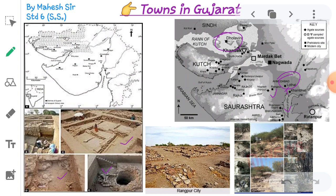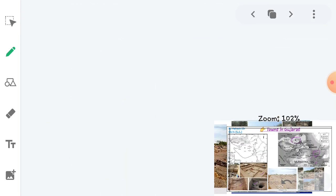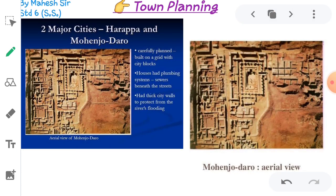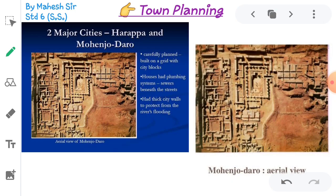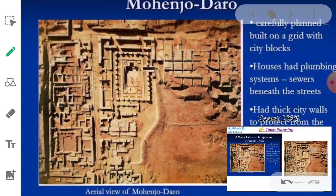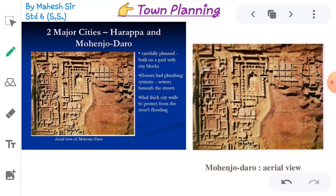Now, town planning — what was happening there? Town planning was one of the most impressive features of the Indus Valley Civilization. Two major cities, Harappa and Mohenjodaro, were built on a grid plan with city blocks. Houses had plumbing systems. Streets had thick city walls to protect from river flooding. The scientific and outstanding town planning of those days is a wonder. This is especially evident in the city of Mohenjodaro. The architecture was built on a scientific basis.